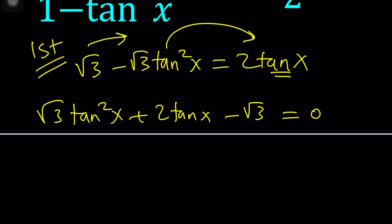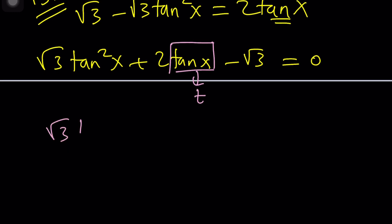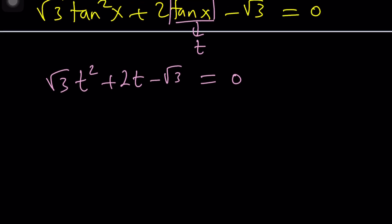Now to solve this let's use substitution because it makes things a little easier on ourselves so let's go ahead and call this t. So now we have square root of 3t squared plus 2t minus square root of 3 equals 0. That's our equation in t. If you don't like tea and you like coffee better you can also use coffee as your variable but tea is easier in my opinion and I like tea.